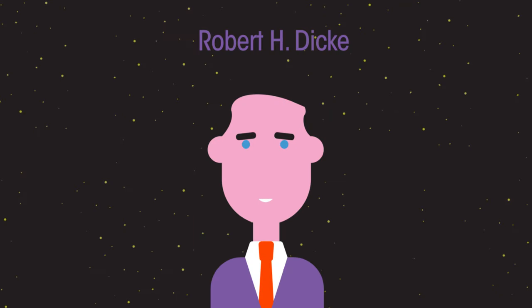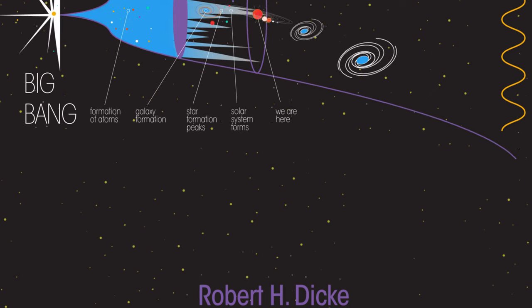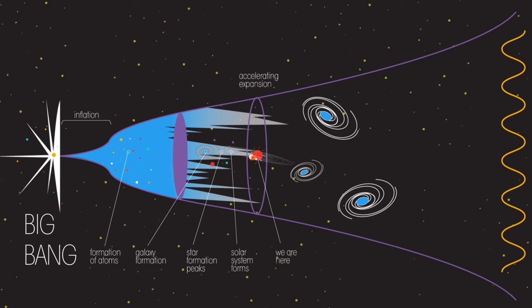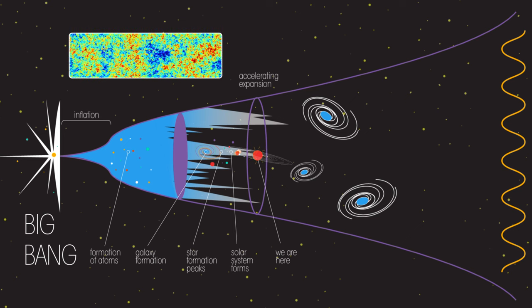Around the same time, Robert Dickey was investigating something called the Big Bang Theory. He thought that if this theory for the origin of the universe was correct, the whole universe should still have some microwaves present. Then Dickey heard about Penzias and Wilson's experiments.